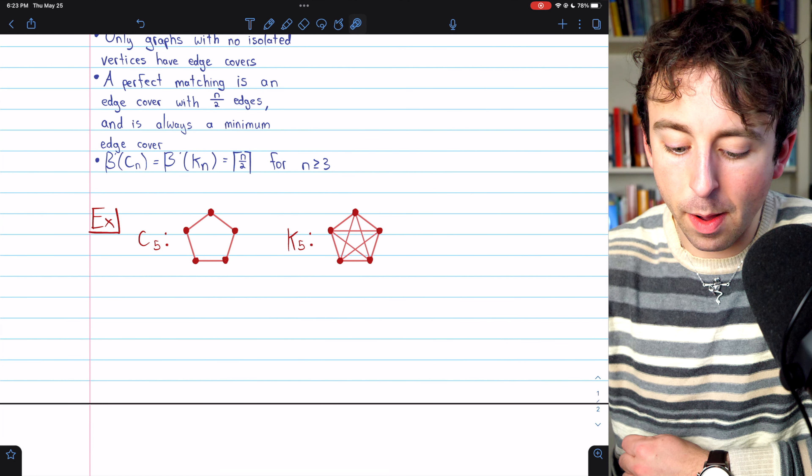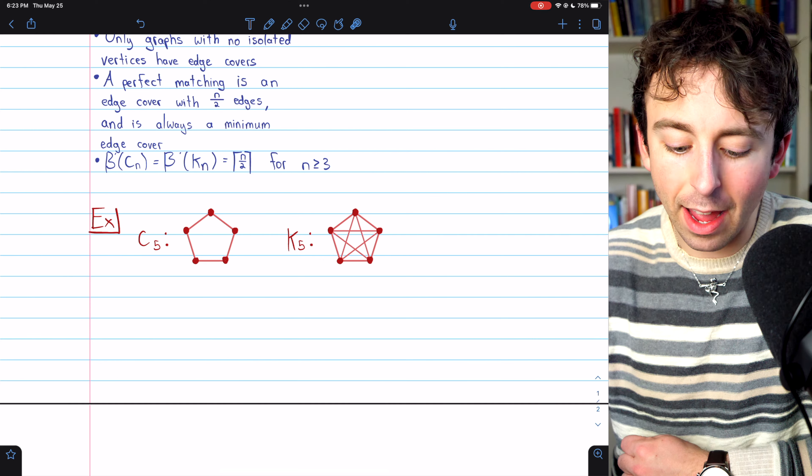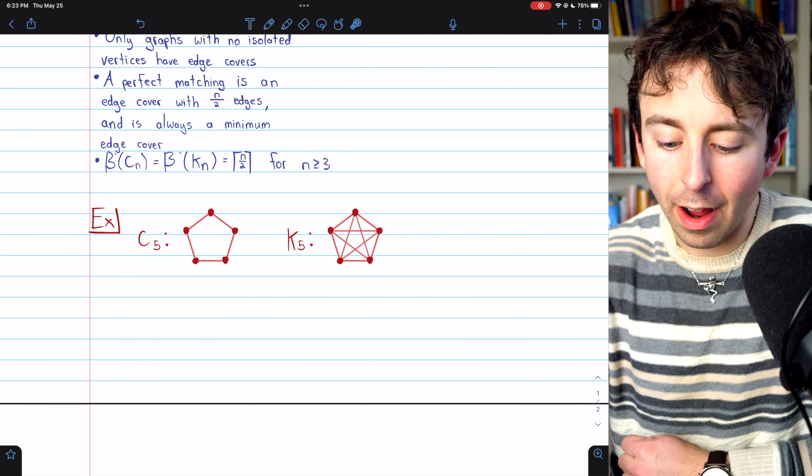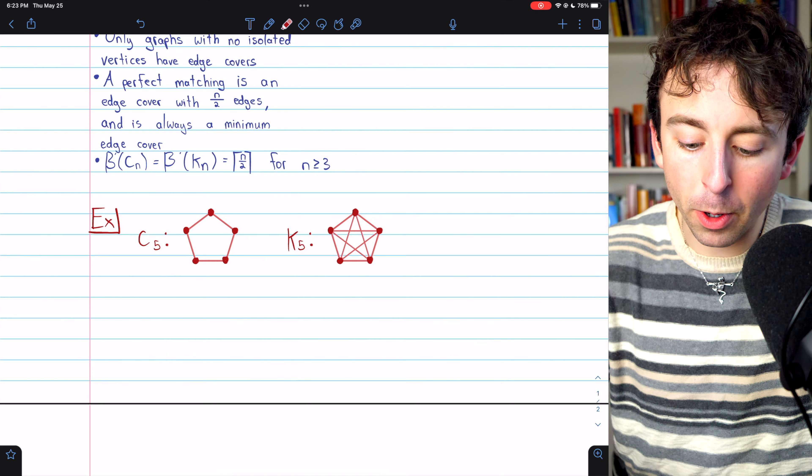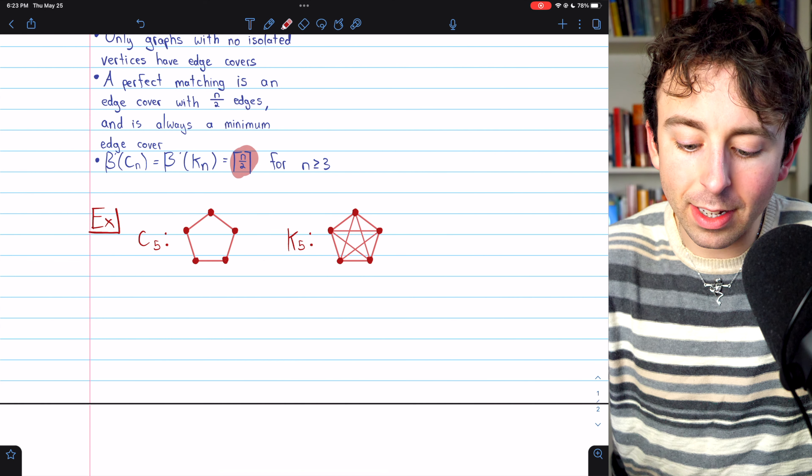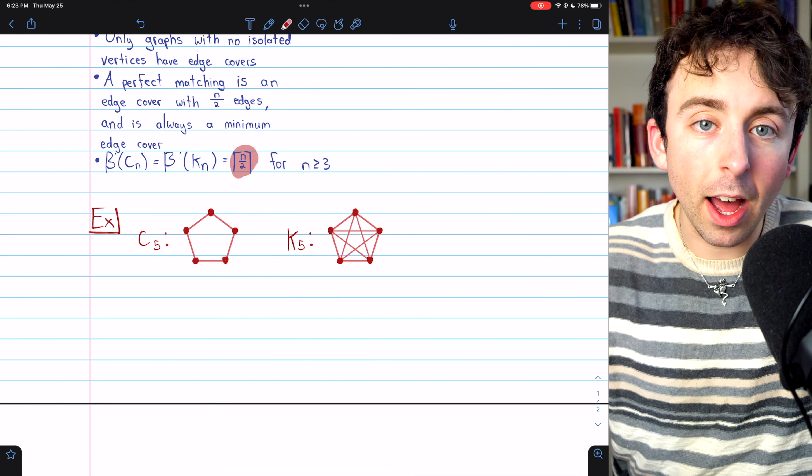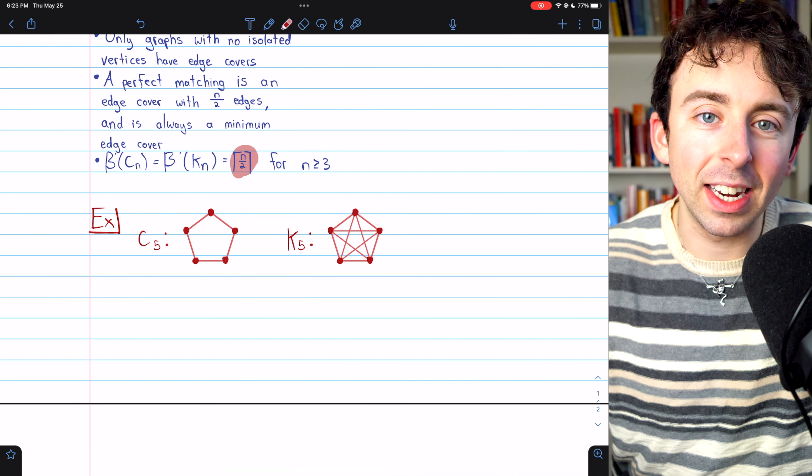Here's one final example with C5 and K5. Looking at the cycle graph with five vertices, again, the edge covering number is just going to be the number of vertices divided by two rounded up if that division doesn't give us an integer.